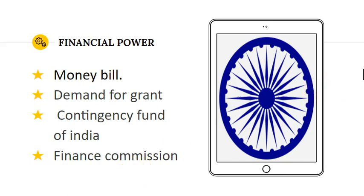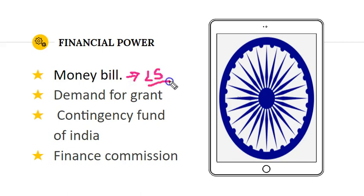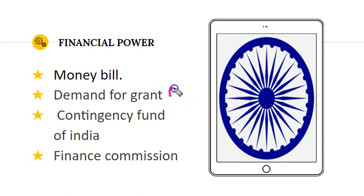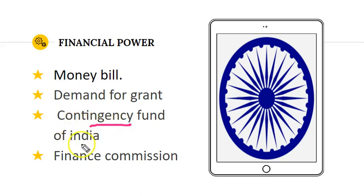We will now discuss the financial powers associated with the President. The Money Bill can be introduced in Parliament only with the prior consent of the President; without his consent, a Money Bill cannot be implemented, and it is introduced in Lok Sabha only — not in Rajya Sabha. All demands for grants from the Consolidated Fund of India, mentioned in Article 266 of the Indian Constitution, cannot be made without the assent of the President. The President also authorizes the government to draw money from the Contingency Fund of India in case of natural calamities.